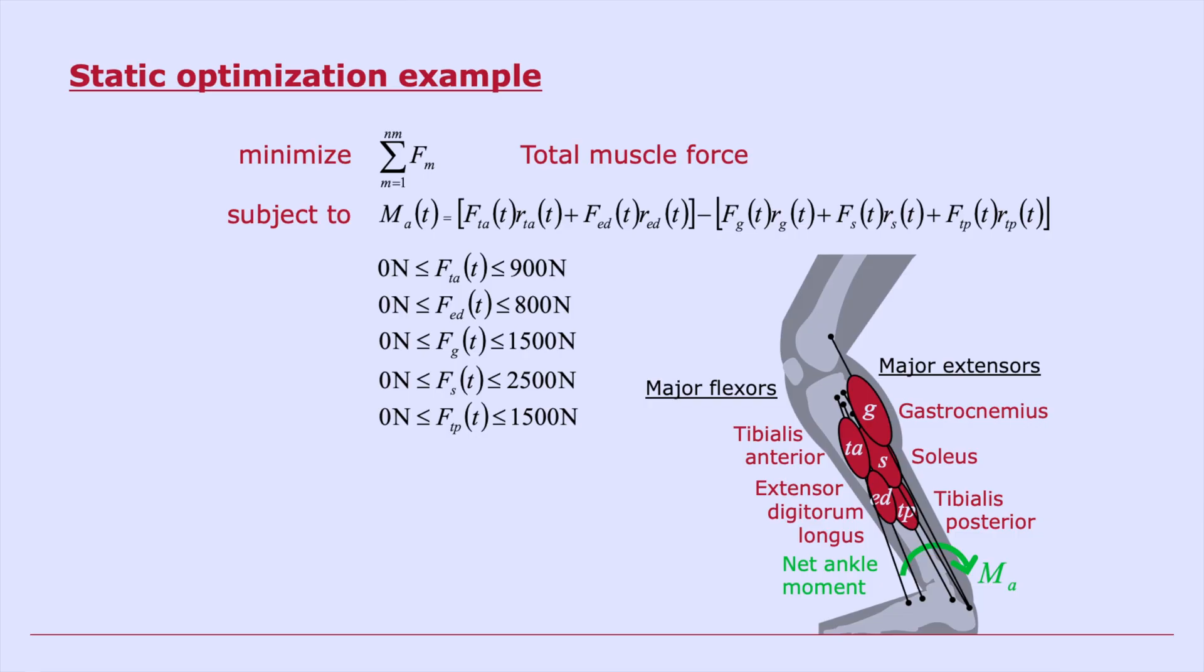So what might our objective function be? One possibility is that we want to minimize the total muscle force. Why don't you take a minute and think about what would happen if we tried to minimize the total muscle force? So our objective function is just to get the smallest possible number when we add up all the forces generated by the muscles. What do you think the solution would look like?